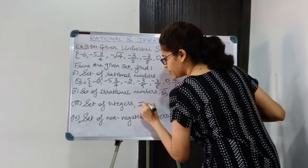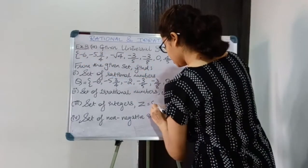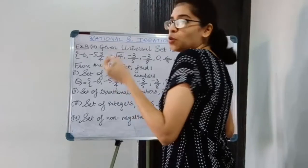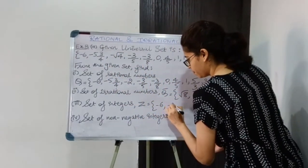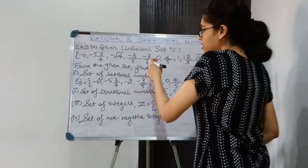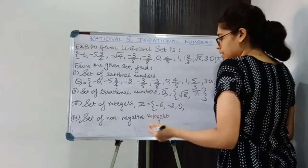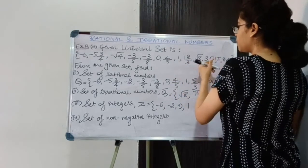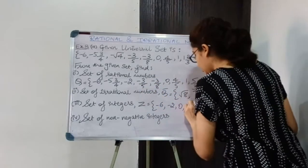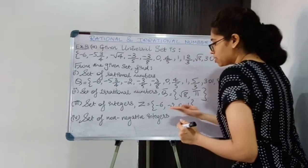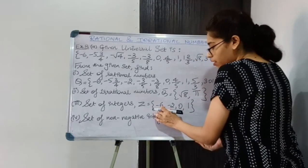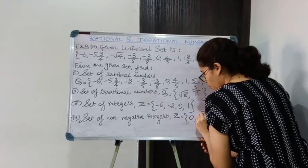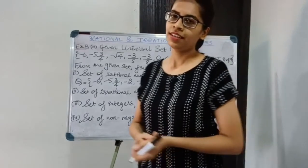Set of integers (Z): −6 is an integer. The fractions are not integers. −√4 = −2 is an integer. 0 is an integer. 1 is an integer. Fractions, irrational numbers, and terminating decimals do not belong to Z. For non-negative integers (Z′): from the integers {−6, −2, 0, 1}, the two negative ones are excluded. So Z′ = {0, 1}. And we are done with question number 4.